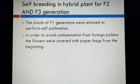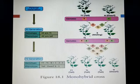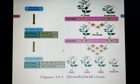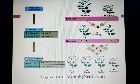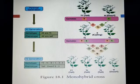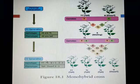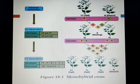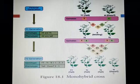The next step is self-breeding in hybrid plants for F2 and F3 generation. The plants of F1 generation are allowed to perform self-pollination. In F1 generation, the seeds obtained undergo self-pollination. In the parent generation, cross-pollination was done to get F1 generation; then self-pollination in F1 generation gave us seeds, and from those seeds we get F2 generation and next F3 generation. In F2 generation you can see that some are homozygous tall and some are heterozygous tall.